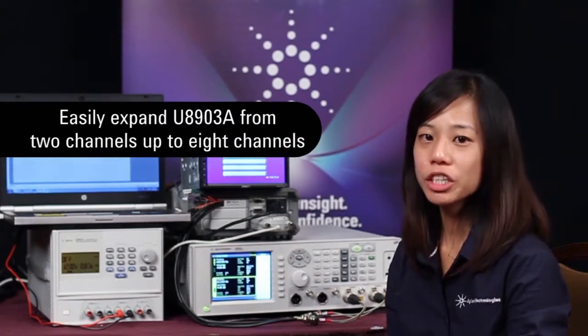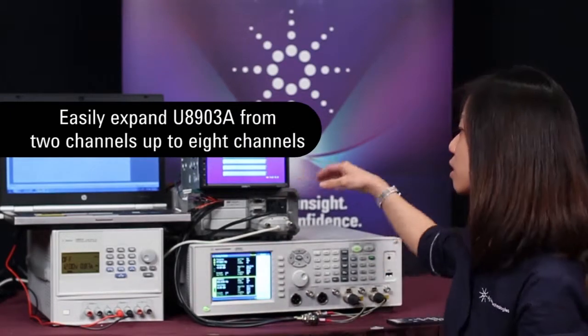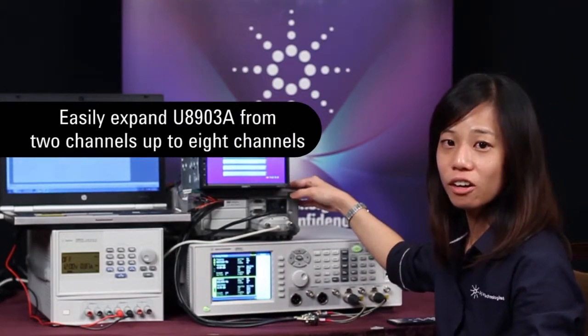As you can see, it is very easy to expand your U8903A Audio Analyzer from two channels up to eight channels, simply by using the switch matrix and the data logger.